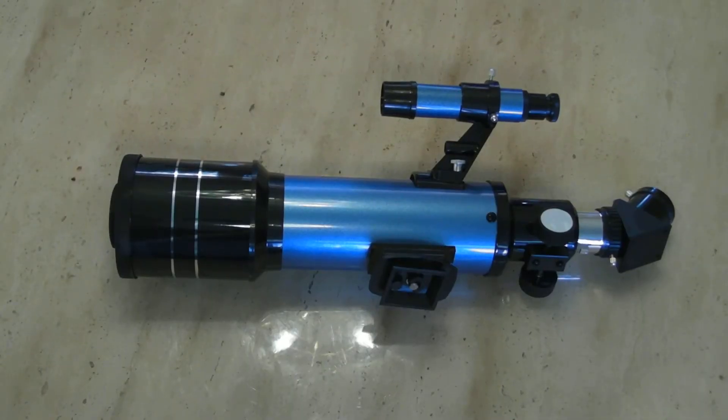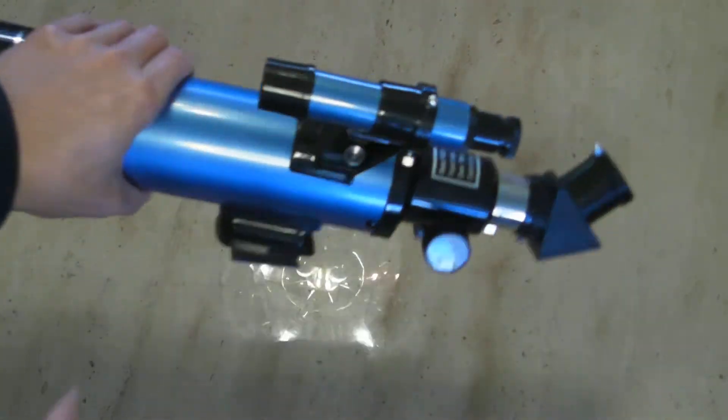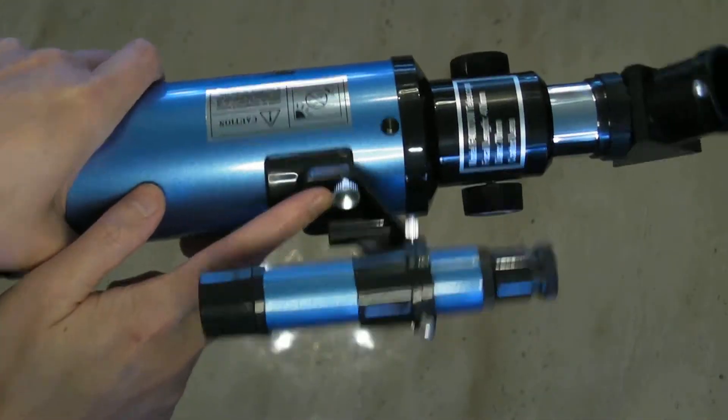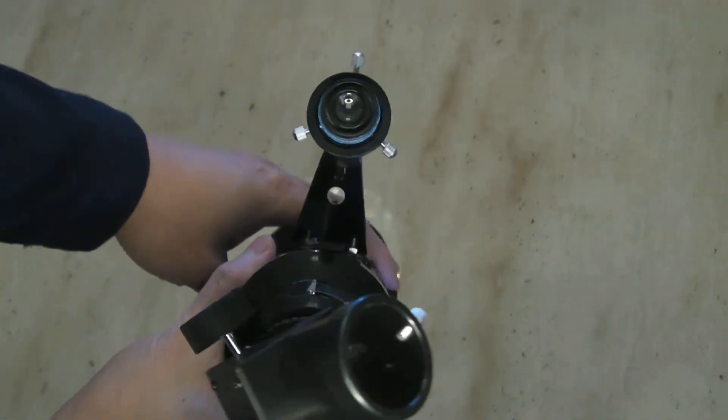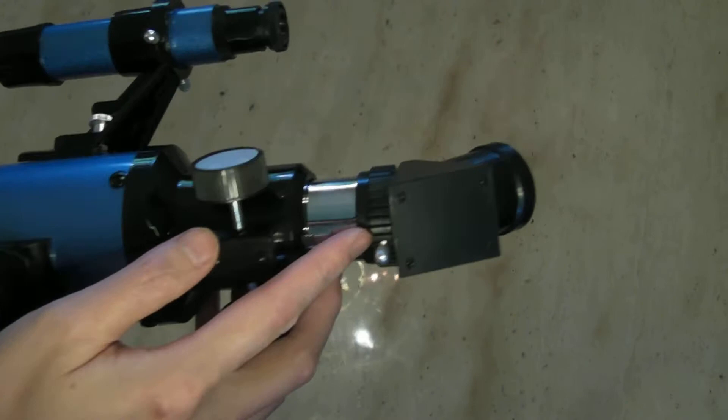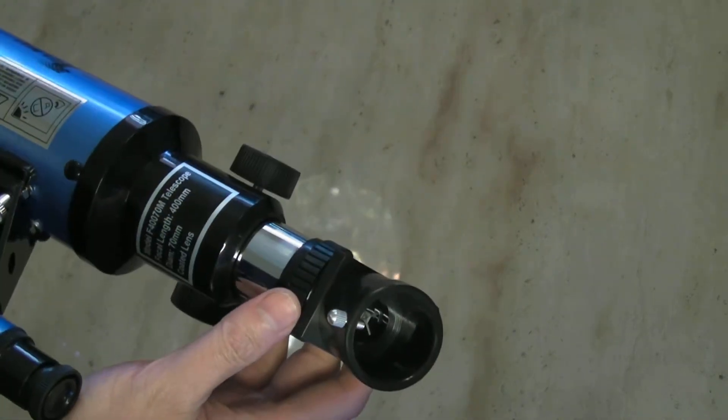So when you open your box you'll find your telescope which comes with the finder scope that has to be attached, and these are the two screws you have to put on to attach your finder scope. You also attach the eyepiece here and there's a covering to protect the scope itself.